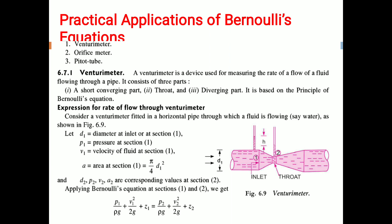The venturimeter is based on the principle of Bernoulli's equation. For the derivation, consider a venturimeter fitted in a horizontal pipe through which a fluid, say water, is flowing as shown in figure 6.9. Let d1 be the diameter, p1 the pressure, and v1 the velocity at section 1. Similarly, d2, p2, and v2 are the diameter, pressure, and velocity at section 2. A1 is the area at section 1, calculated as pi by 4 times d1 squared.